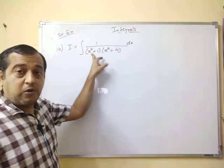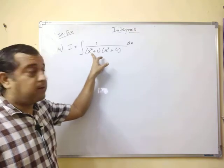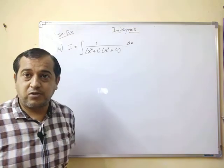In this case you are having two factors: one is x square plus 1, other is x square plus 4. So clearly it is a case of partial fraction.